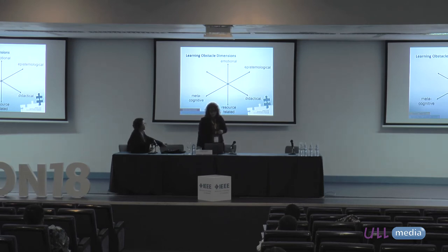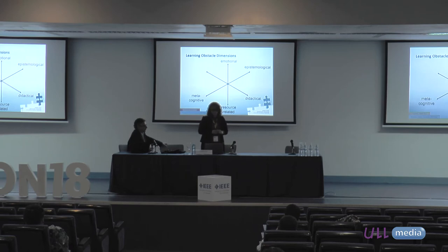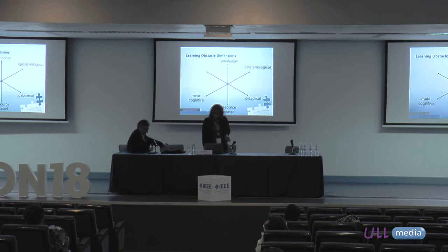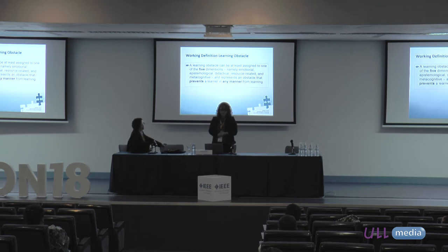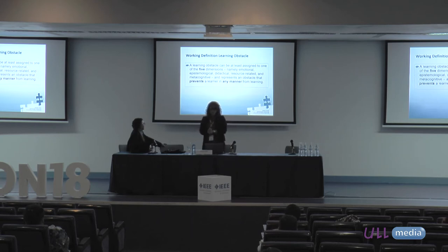The sixth is the psychogenetic learning obstacle dimension, derived from cognitive load theory — specifically the germane load — where this obstacle reduces that germane load. We define a learning obstacle as follows: a learning obstacle can be assigned to at least one of the five dimensions, namely the emotional, epistemological, didactical, resource-related, and metacognitive.